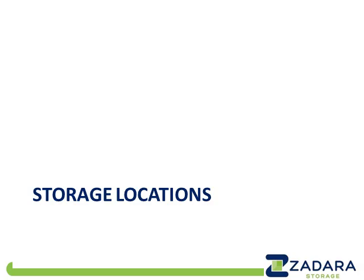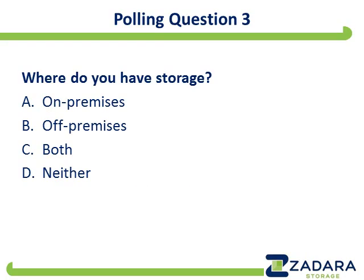Let's talk about where storage resides, because that's changing. This brings me to polling question number three: where do you have storage? Is your storage A, on-premises; B, off-premises; C, both; or D, neither — you don't have storage? Storage can go on-premises, off-premises, or both. One way of connecting the two is via something called a gateway — a device that resides on-premises and provides access to storage that is in the cloud or somewhere off-premises. The gateway itself doesn't have any storage, but it provides access using existing compatible protocols to cloud-based storage.